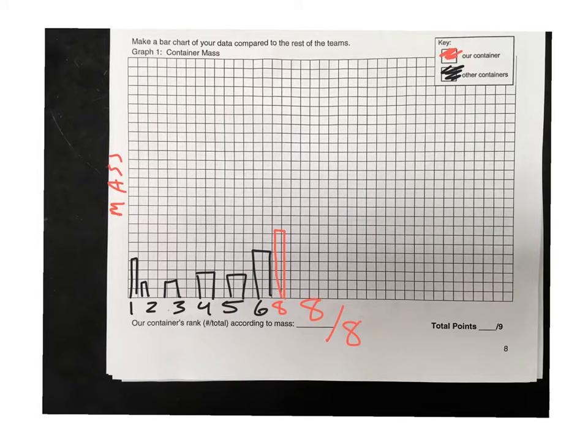So you can see by this example, my team in my fake data was the heaviest mass. So out of eight teams, my rank would be eight. I'm eight out of eight. You want to try and be number one or number two.